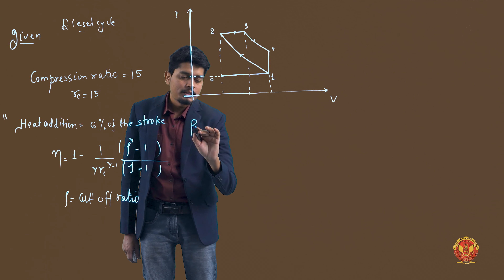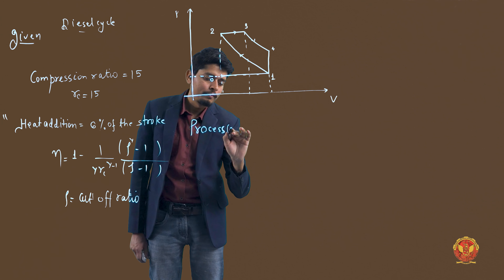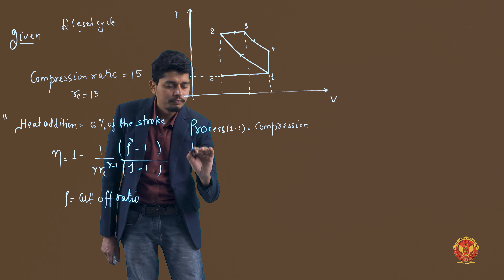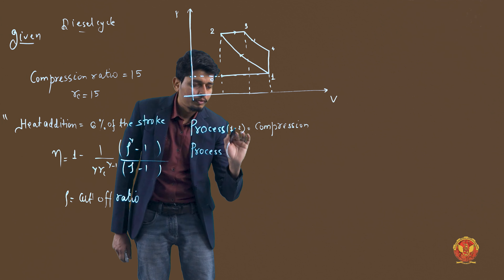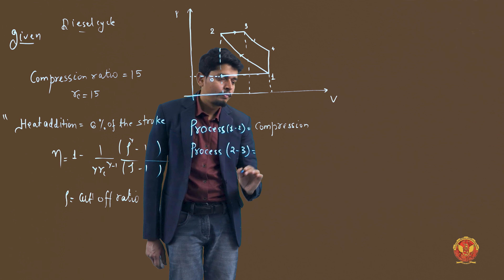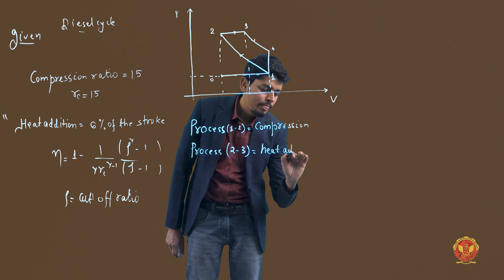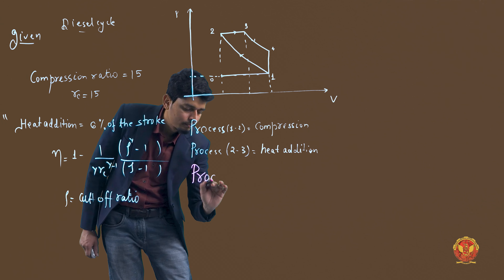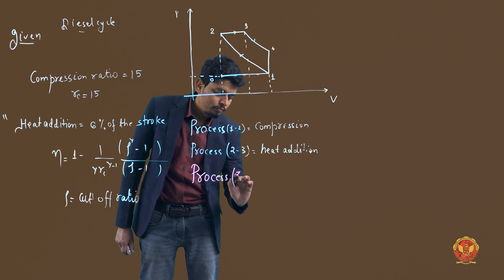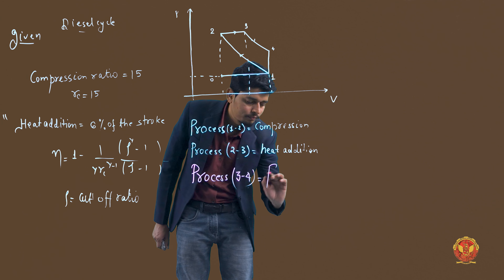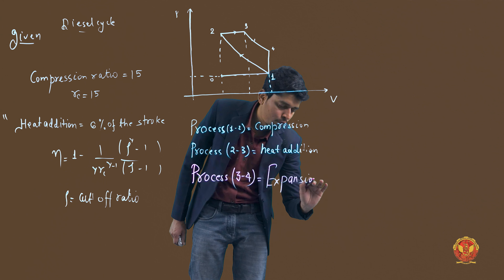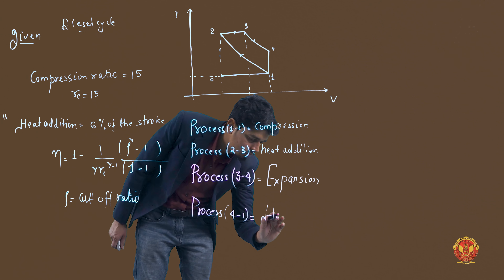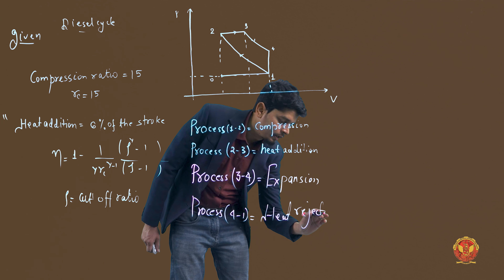Let's list the processes: Process 1 to 2 is compression (adiabatic). Process 2 to 3 is heat addition. Process 3 to 4 is expansion. Process 4 to 1 is heat rejection.